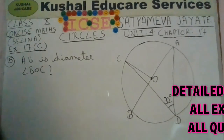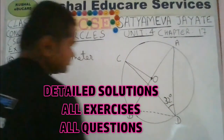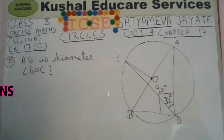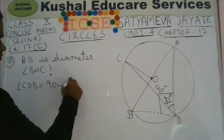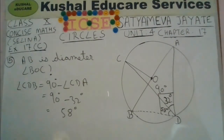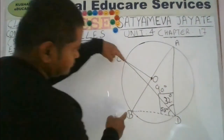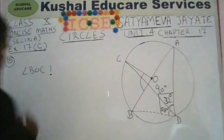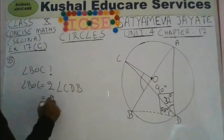As soon as you read that AB is the diameter with O as the center, you must recall the theorem that the angle subtended in a semicircle is 90 degrees. Join points B and D so that angle ADB is 90 degrees. Angle ADC is given as 32 degrees, so angle CDB equals 90 minus 32 degrees, that is 58 degrees. The angle subtended at the center by an arc is twice the angle subtended at the circumference, so arc BC will subtend an angle of 2 times 58 degrees at center O.